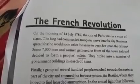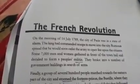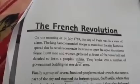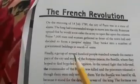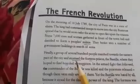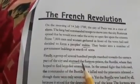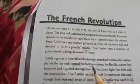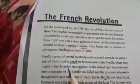On the morning of 14 July 1789, the city of Paris was in a state of alarm. The king had commanded troops to move into the city, and rumors spread that he would soon order the army to open fire upon the citizens. Some seven thousand men and women gathered in front of the town hall and decided to form a militia — militia means people's army. They broke into a number of government buildings in search of arms. Finally, a group of several hundred people marched toward the eastern part of the city and stormed — storm means attack — the fortress prison.